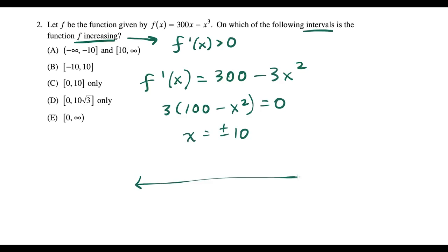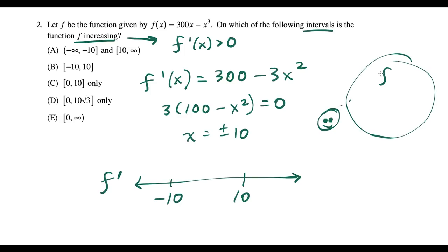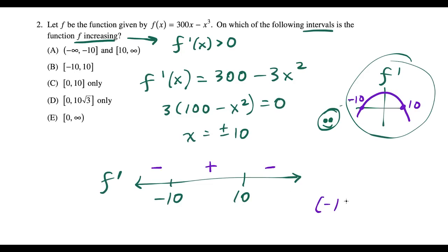A shortcut: since f'(x) is a quadratic with a negative x² term, it's an upside-down parabola with roots at −10 and 10. It starts negative, goes positive between the roots, then negative again. So f is increasing on (−10, 10), which matches choice B.